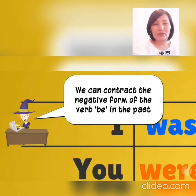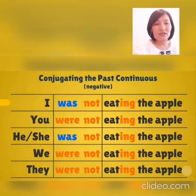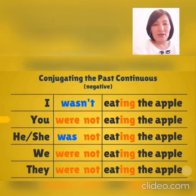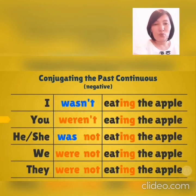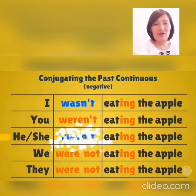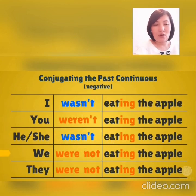We can contract the negative form of the verb be in the past. For example: I wasn't. You weren't. He or she wasn't. We weren't.